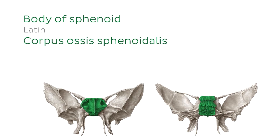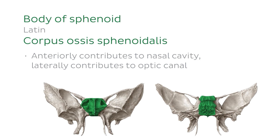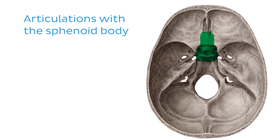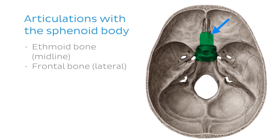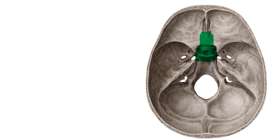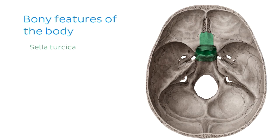Anteriorly, the body contributes to the nasal cavity, while laterally it builds the medial wall of the optic canal. In this superior view of the cranial fossa, we can see where the body of the sphenoid bone is in relation to the other bones. Anteriorly, it articulates with the ethmoid bone in the midline and the frontal bone laterally, while posteriorly it articulates with the clivus of the occipital bone. From this view, we can also see the highlighted depression in the middle of the superior aspect of the body, which is called the sella turcica. The name sella turcica means Turkish saddle in Latin, and we can see in this image the saddle-shaped depression that we're talking about.